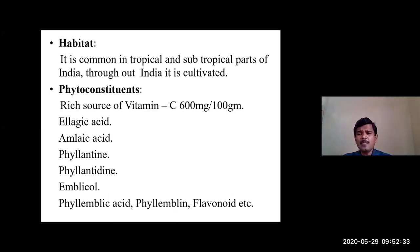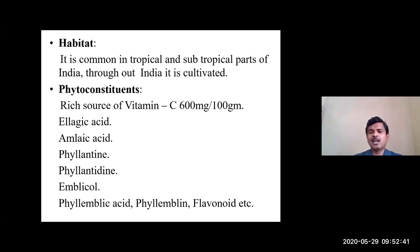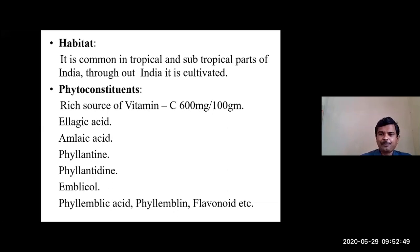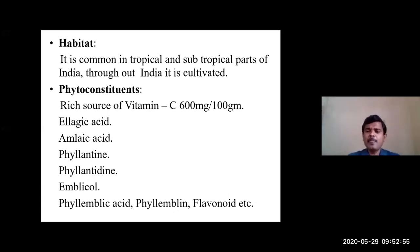Regarding habitat, Amalaki is common in tropical and subtropical parts of India and is widely available throughout India. It is also cultivated throughout India. Regarding active principles and phytoconstituents, Amalaki is a rich source of vitamin C - around 600 mg of vitamin C is present in 100 grams of Amalaki.